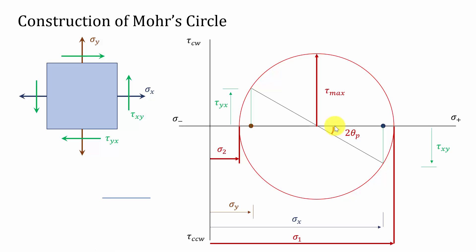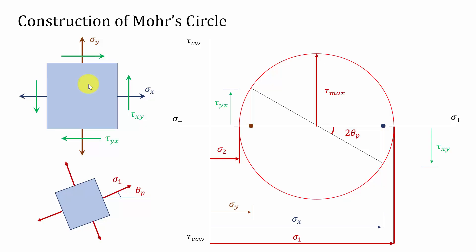Now I can mark a horizontal line to rotate this element and I am marking an angle θp. I am constructing the element with four stresses: sigma 1 to represent the maximum principal stress and sigma 2 to represent the minimum principal stress. Here you can see that sigma 1 is on the tensile side and sigma 2 is also on the tensile side. This is how we can construct a Mohr circle and evaluate the principal stresses.